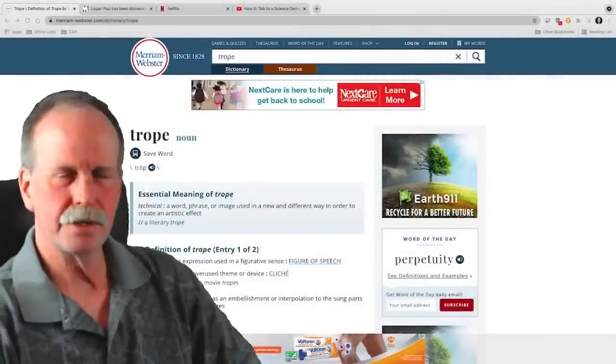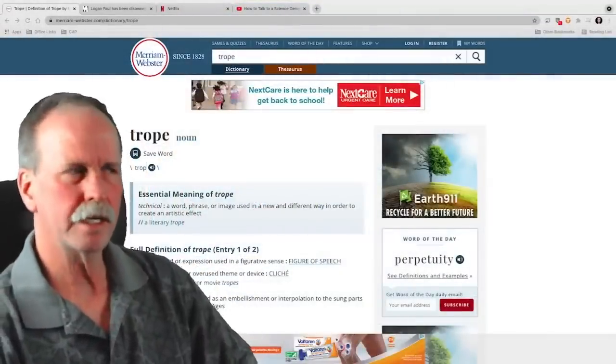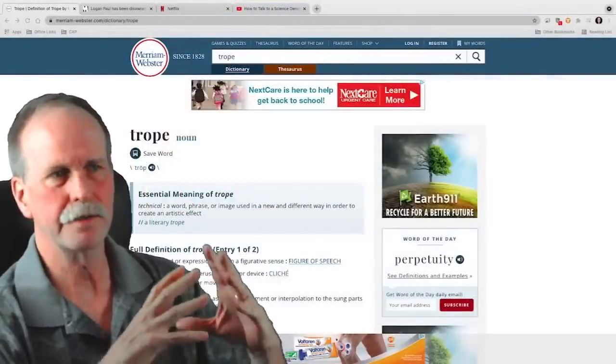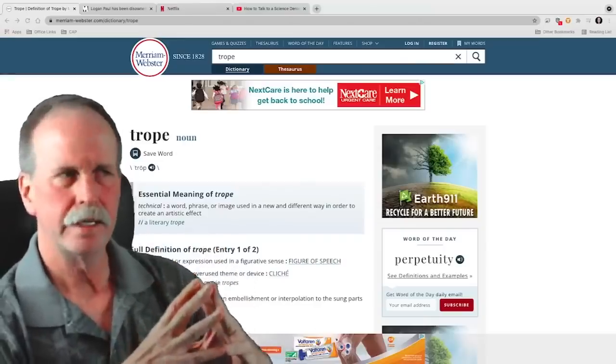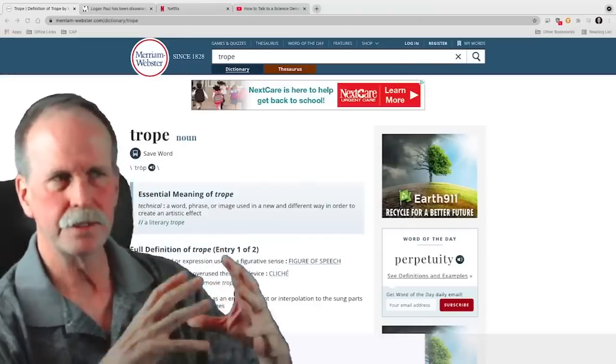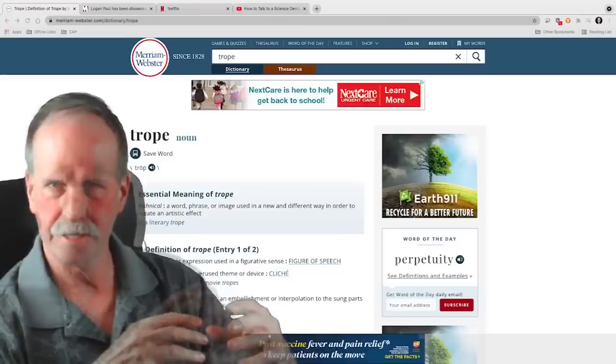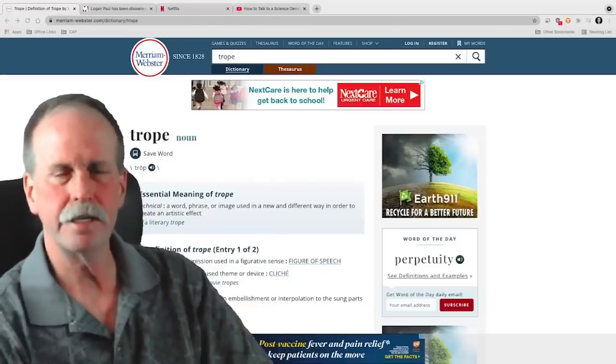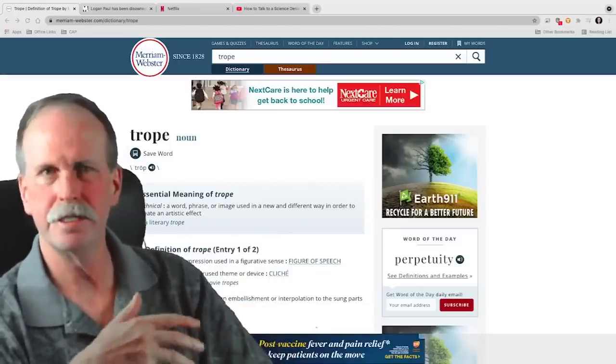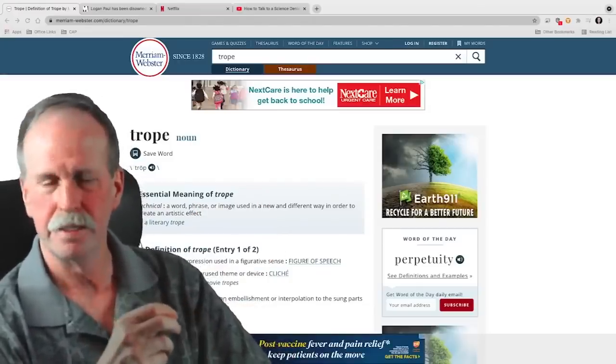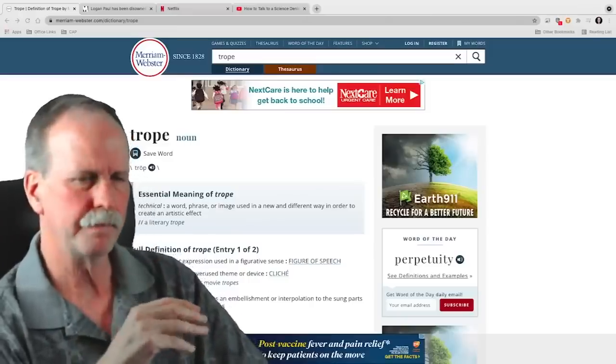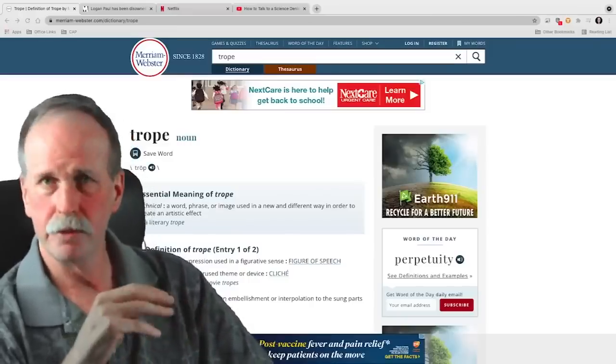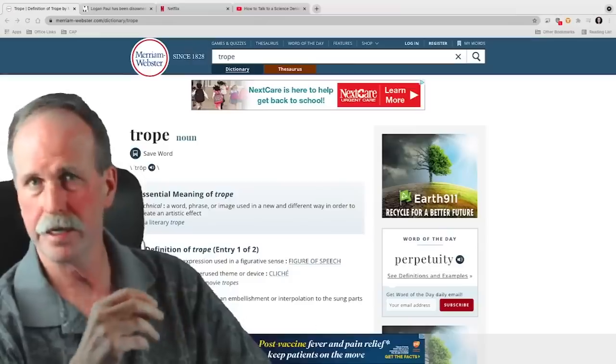Now, in our next episode, what I want to talk about is what Dr. McIntyre calls the five tropes of science denial. Now, a trope is a literary mechanism, a party line, so to say. If you look at the definition of it here, it's an overused device or theme. So basically, this is the five themes of science denial. And let me just go over them real quick in preparation for our next episode.